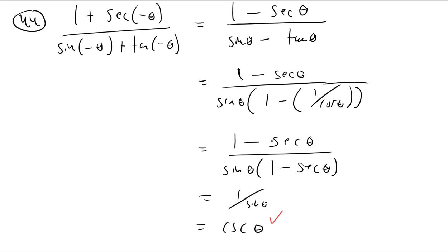How are they going from one minus secant divided by sine times one minus secant to this? What are they doing from here to here? Are they canceling the one minus secant? Right. One minus secant divided by one minus secant would leave you one over sine. So that's okay too, right? I don't see any error in that step.